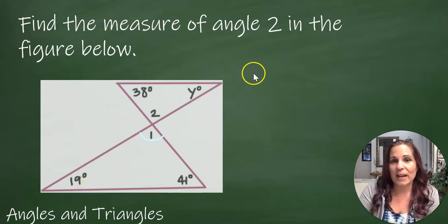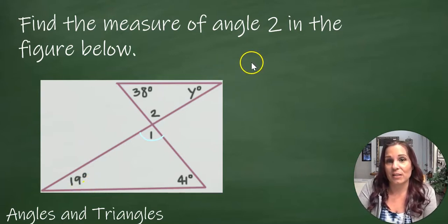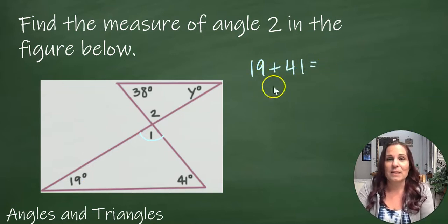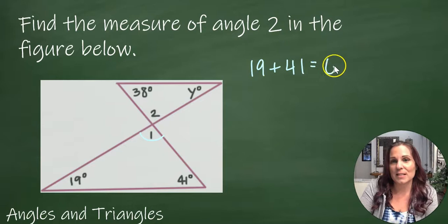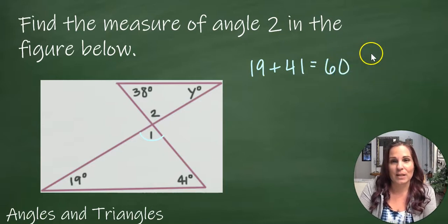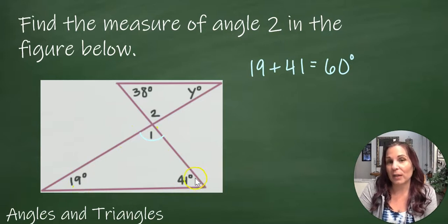So I know that these three angles have to add up to 180. So if I add the two angles that I've got, 19 plus 41, that gives me 60.